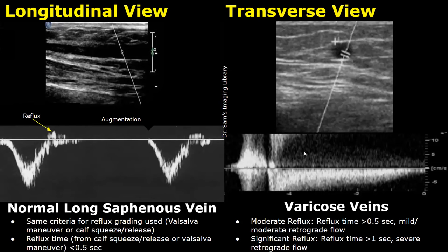However, in varicose veins we can get a large amount of reflux, and you can see a large waveform of retrograde flow. If this reflux time is more than 0.5 seconds, it is considered moderate reflux, and if this retrograde flow duration is more than one second, it is considered severe retrograde flow. The same criteria for reflux grading is used whether it is done by Valsalva maneuver or through augmentation.